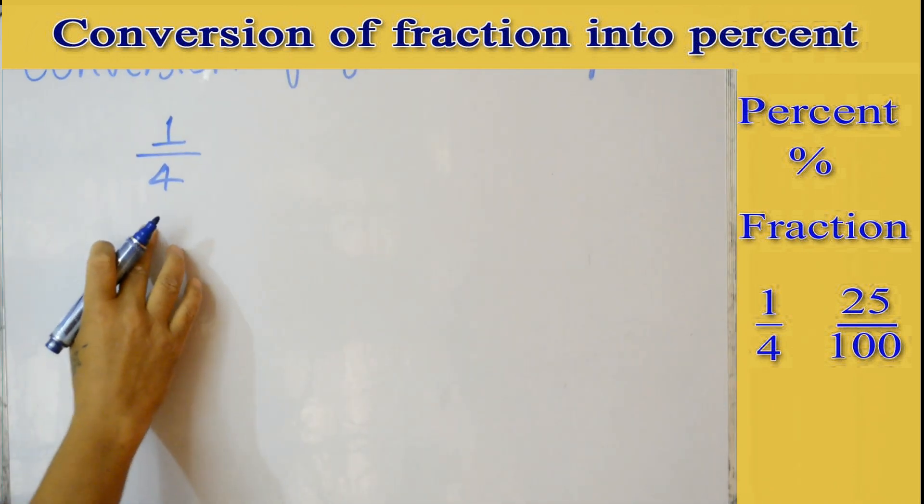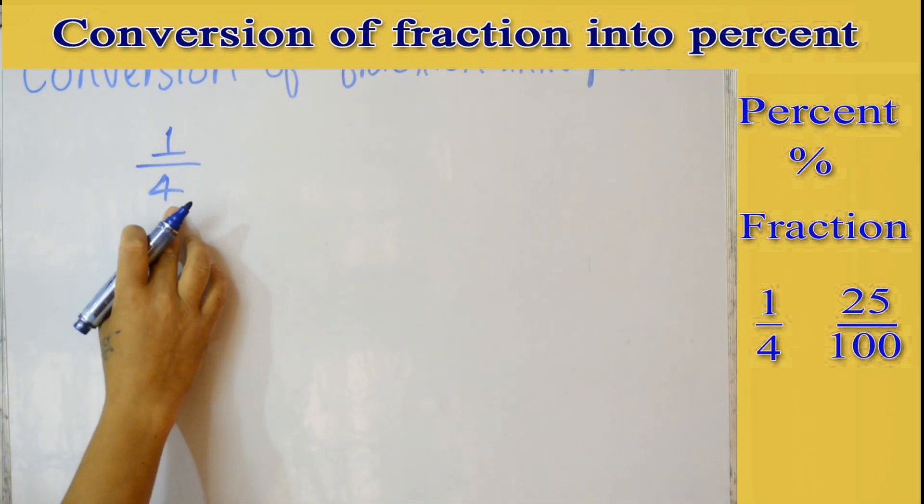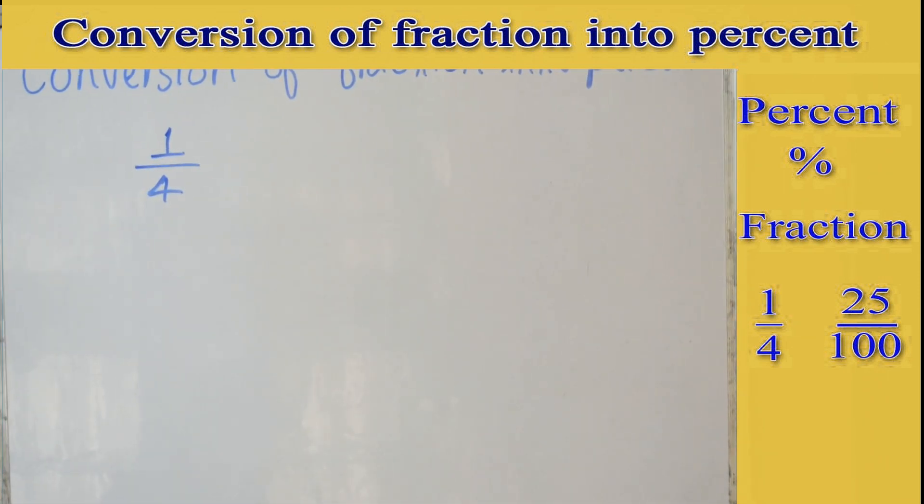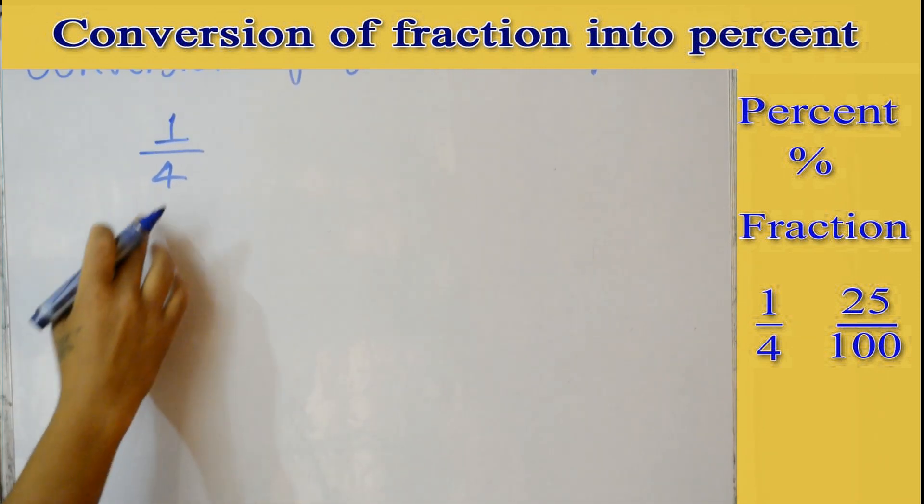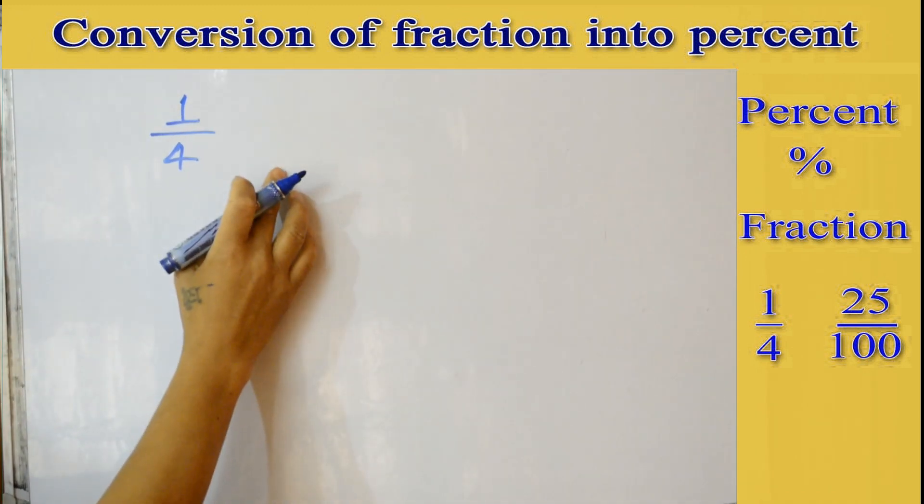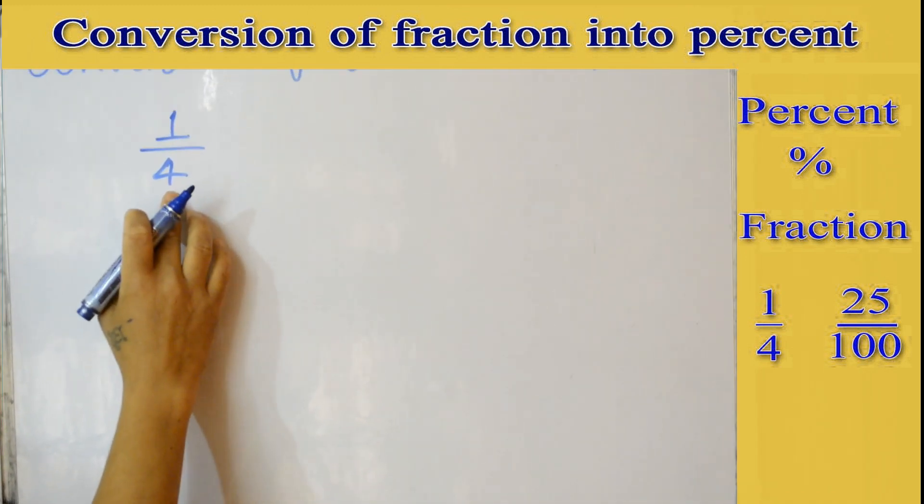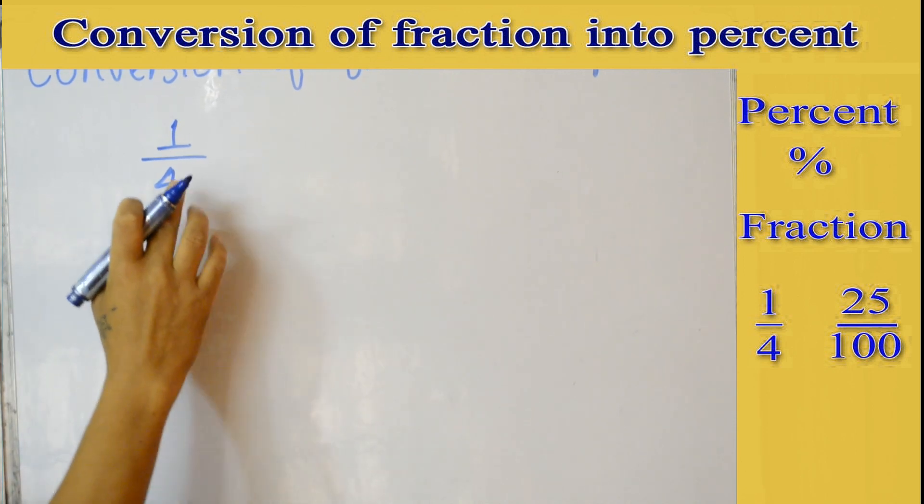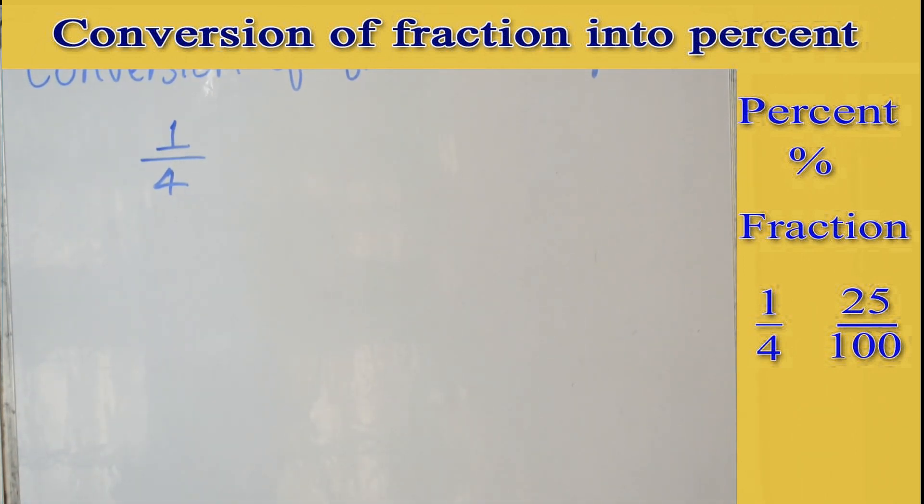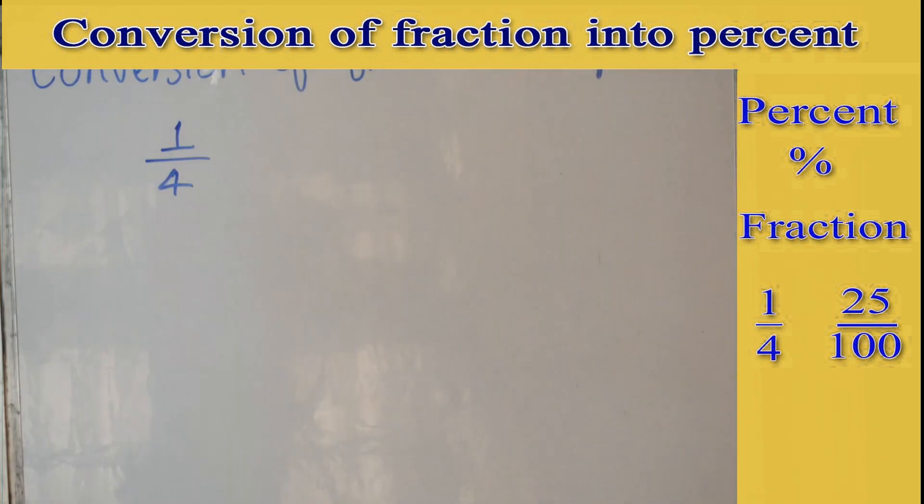You apply two rules. We can make this denominator 100. Percent is out of 100, that's why if we convert this denominator into 100, then we can write the percent very easily.